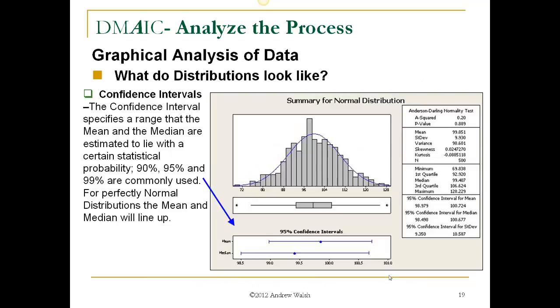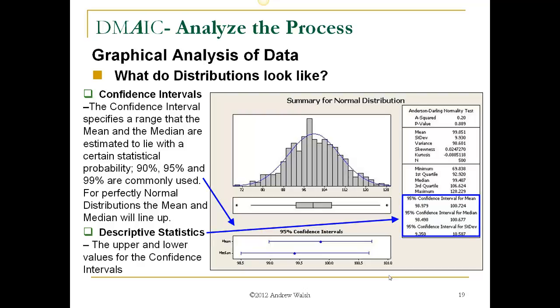Also the confidence intervals. The confidence interval specifies the range that the mean or the median are estimated to lie with a certain statistical probability, and that can be selected by you. Ninety, ninety-five percent, and ninety-nine percent are commonly used. Now for a perfectly normal distribution, the mean and the median will line up. Here you see that these are not lined up, meaning there is some kind of skewness or non-normality to the distribution. And again, the descriptive statistics tell you where the upper and lower values are of the confidence intervals. So, the confidence interval for the ninety-five percent confidence interval for the mean, it can be anywhere from 98.979 to 100.724.